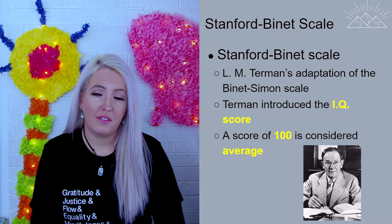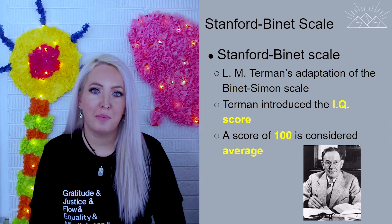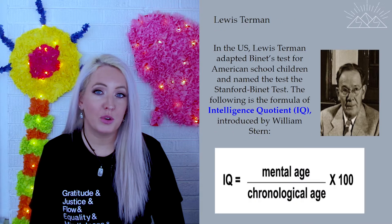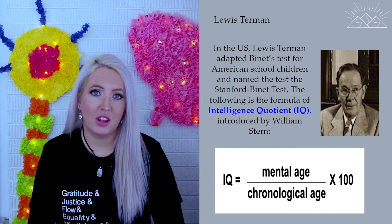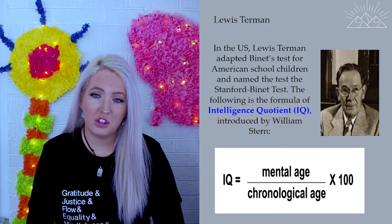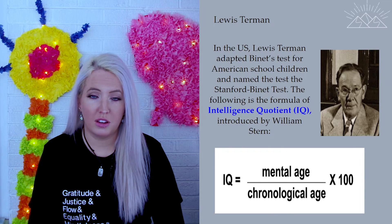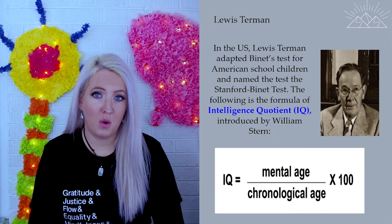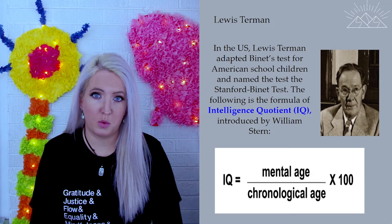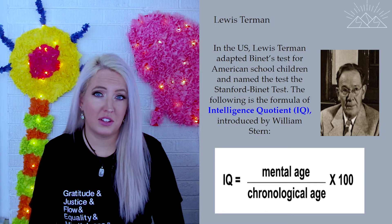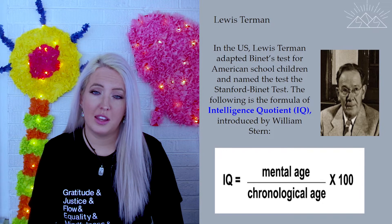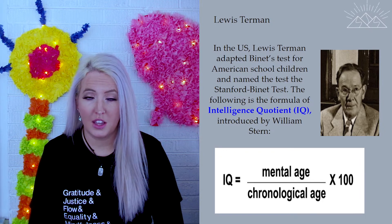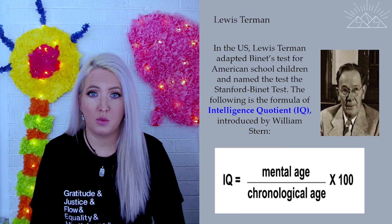An IQ score of 100 is considered average because of the formula used to determine IQ. The formula takes the mental age, divides it by the chronological age, and multiplies by 100. So that 8-year-old with a mental age of 8 would score 1 times 100, giving an IQ of 100. But if they had a mental age of 10, then 10 divided by 8 equals 1.2, and their score would be 120.